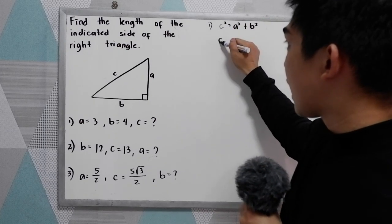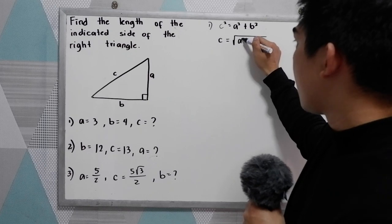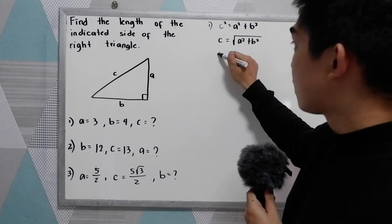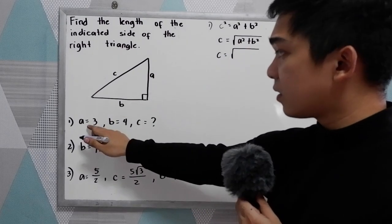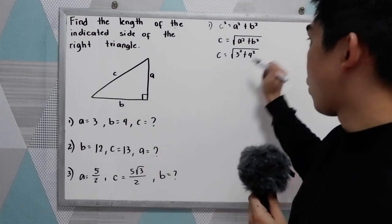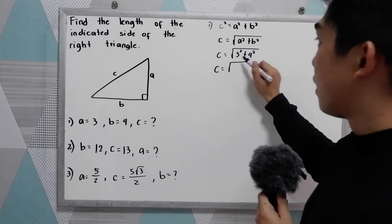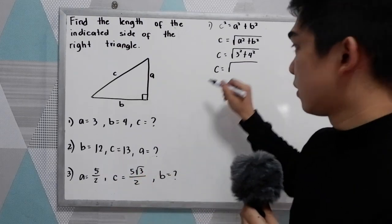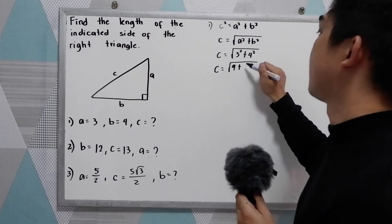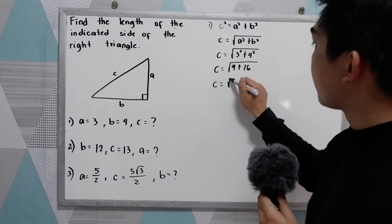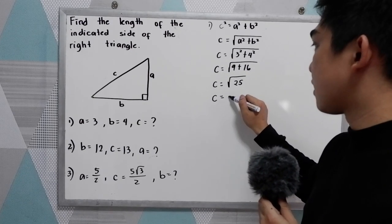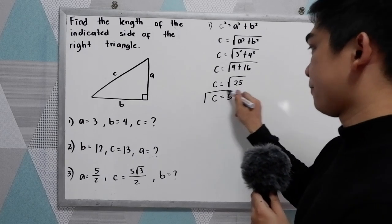Extracting the square root gives us c equals the square root of a squared plus b squared. So c equals the square root of 3 squared plus 4 squared — that is the square root of 9 plus 16, which is the square root of 25. So the value of c is 5.